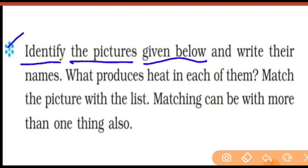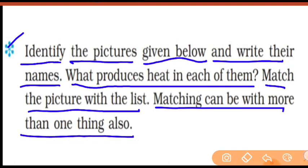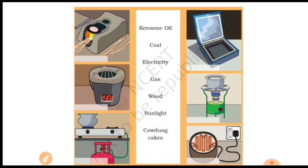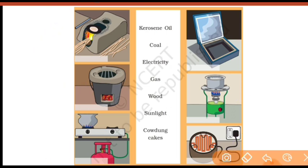Next, just below that there is one more question: identify the pictures given below and write their names — what produces the heat in each of them? In all the pictures you will match the picture with the list. Matching can be with more than one thing also. You can see different pictures — one, two, three, four, five, six. You will see the fuel used.